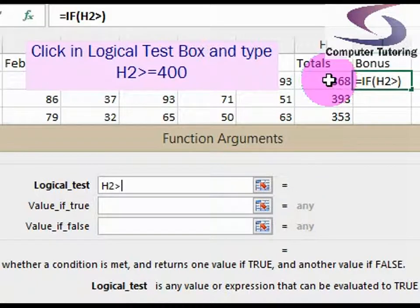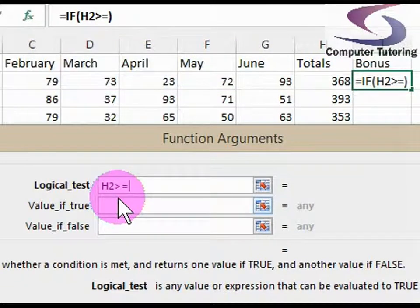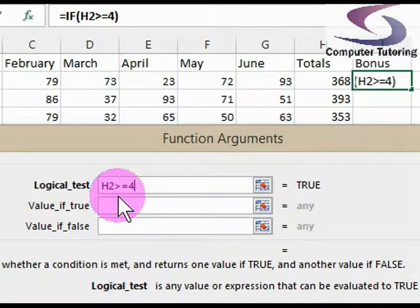is greater than or equal to. You can access that symbol by holding down the shift key on the keyboard and pressing full stop, and after that do the equals sign. So the greater than or equals symbol. And what's the bonus? We said 400. So I'm going to type in 400.